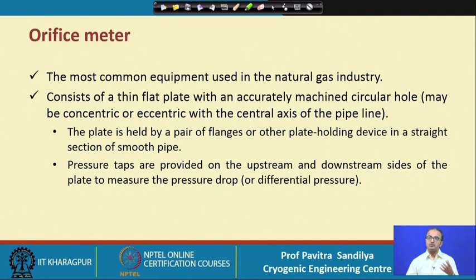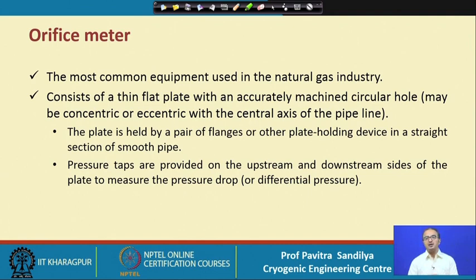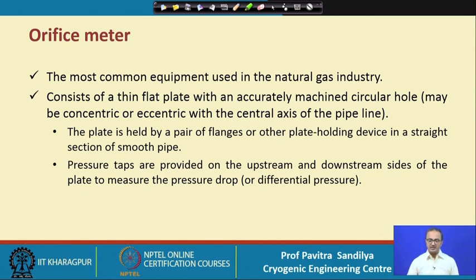Sometimes we also use an eccentric hole, meaning the hole does not have the same axis as the axis of the plate — they have two different axes. However, generally concentric orifice meters are very common. This plate is held by a flange between the two pipelines or some kind of holding device.